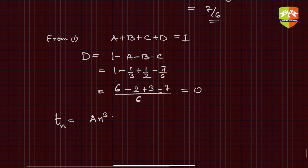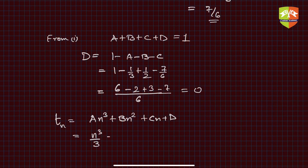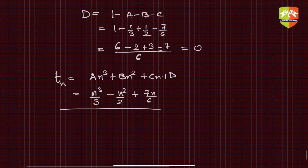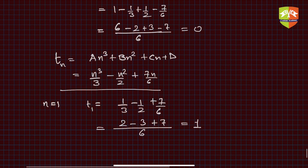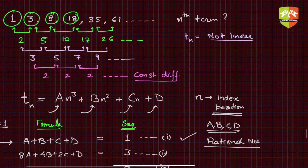We now have the nth term expression: T(n) = n³/3 − n²/2 + 7n/6. Let's verify: for n = 1, T(1) = 1/3 − 1/2 + 7/6 = (2 − 3 + 7)/6 = 6/6 = 1. This matches the first term of the sequence.